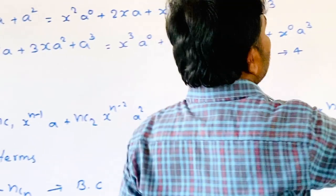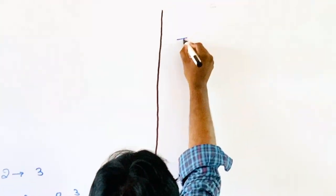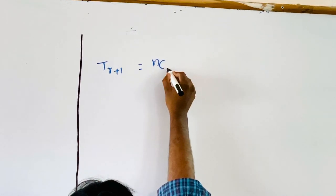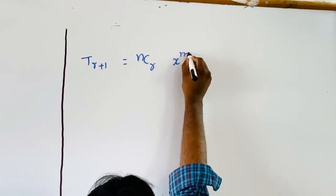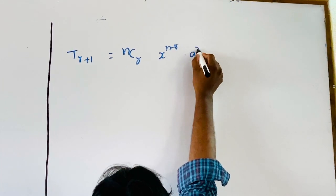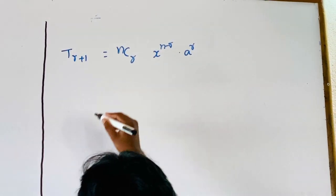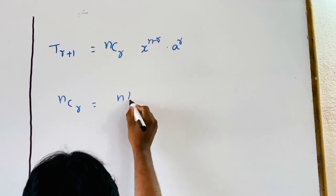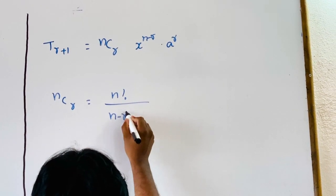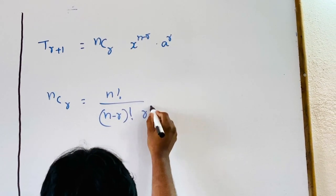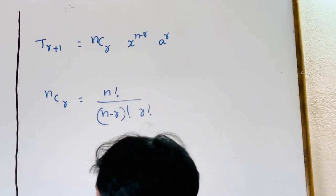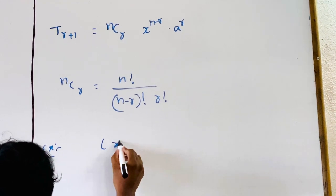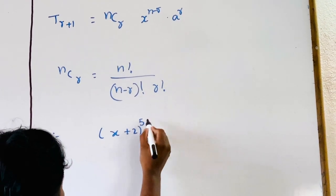In the expansion, the general term is denoted by T(r+1) is equal to nCr into x power (n−r) into a power r. Do you know that nCr is equal to n factorial divided by (n−r) factorial into r factorial? For example, consider (x + 2y) whole power 5.